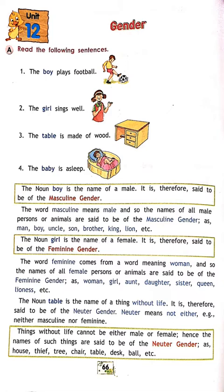It is therefore said to be masculine gender. You have to remember that male genders are masculine. See the spelling: M-A-S-C-U-L-I-N-E — masculine gender. The word masculine means male, and so the names of all male persons or animals are said to be of the masculine gender — as man, boy, uncle, son, brother, king, lion, tiger, etc.